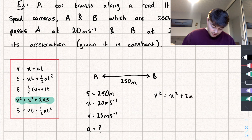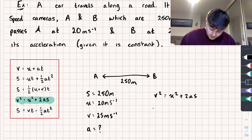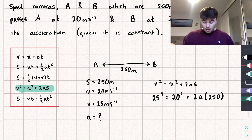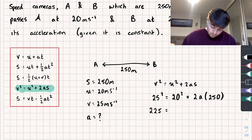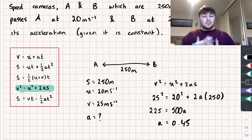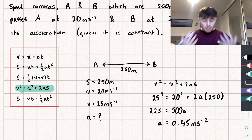Substituting in: 25² = 20² + 2 × a × 250. That gives 625 = 400 + 500a, so 225 = 500a. Dividing both sides by 500, we get a = 0.45 meters per second squared. Remember acceleration is in meters per second squared. Pretty easy.